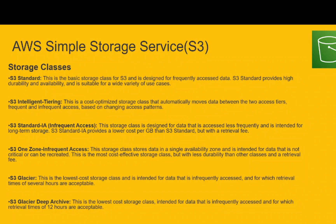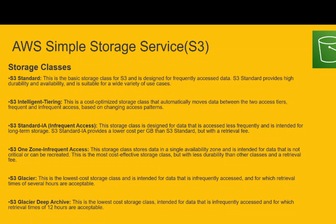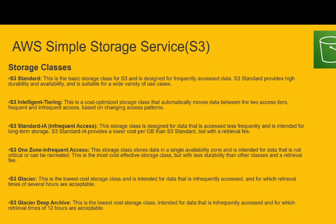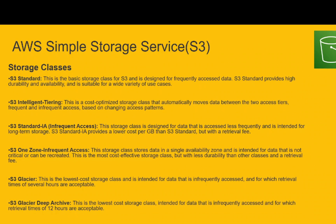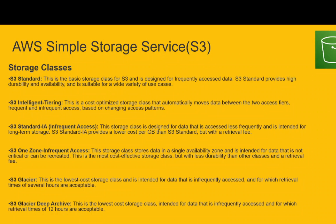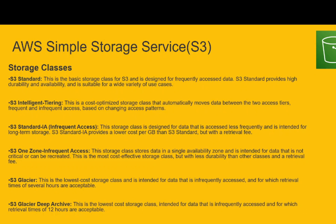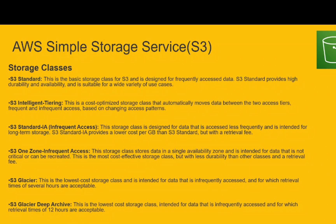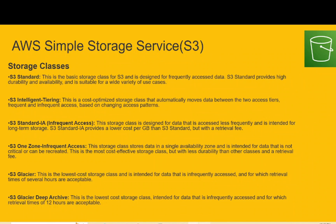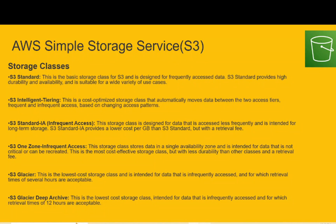Another is S3 Intelligent Tiering, which is a cost-optimized storage class that automatically moves data between two access tiers — frequent and infrequent access — based on changing access patterns. This was not present earlier, but after it was introduced, many companies started using this storage class, making it one of the most efficient options.